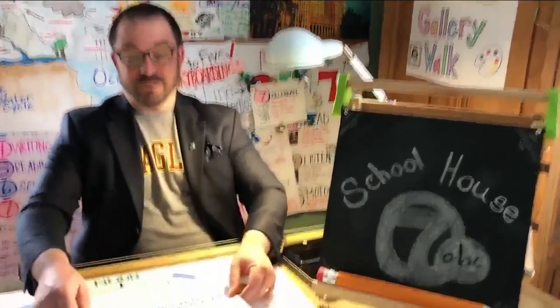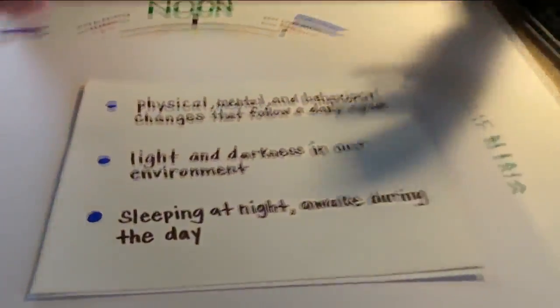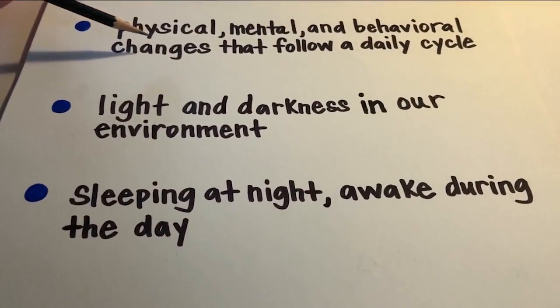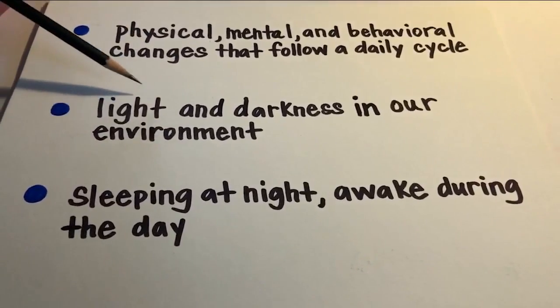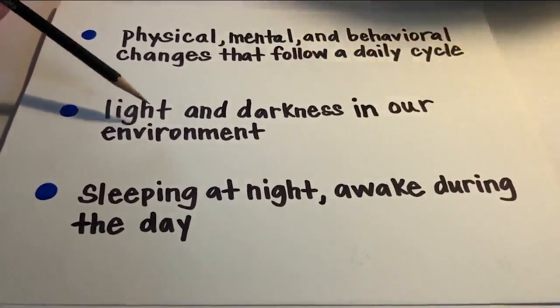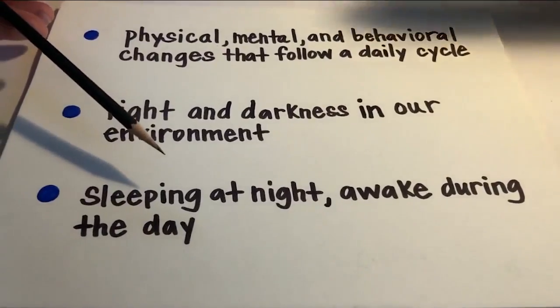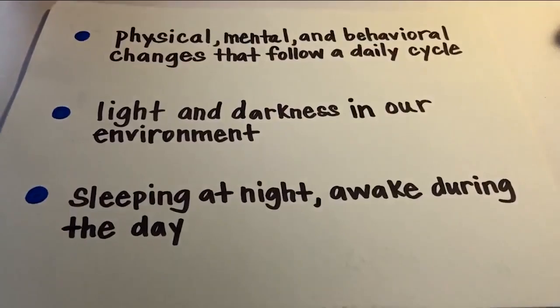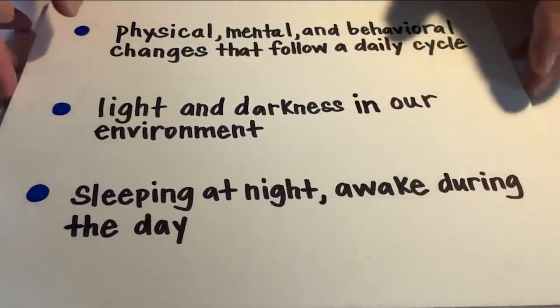Let's get started. Now I know that sounds really complicated, but it basically means the physical, mental, and behavioral changes that follow a daily cycle in life. Light and darkness in our environment make us do things like sleep at night or be awake during the day. Circadian rhythm is why babies naturally fall asleep at night and wake up during the day.